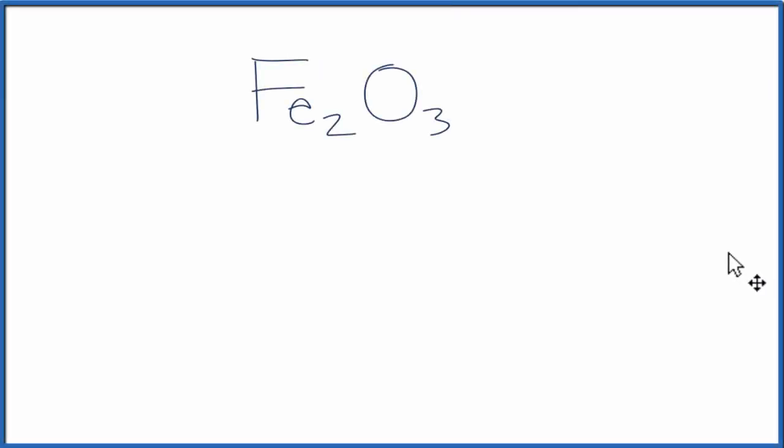In this video, we'll calculate the percent composition for each of the elements here in Fe2O3, that's iron 3 oxide. To do that, we'll use a formula. It looks like this.